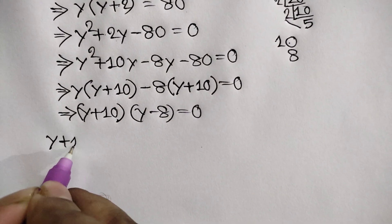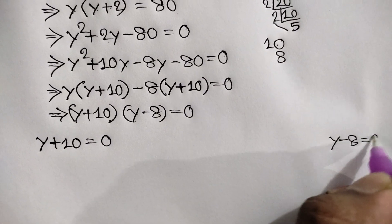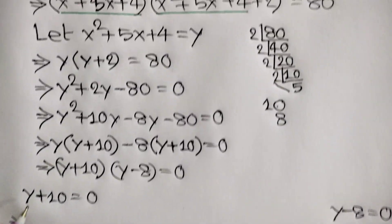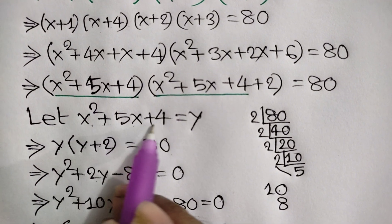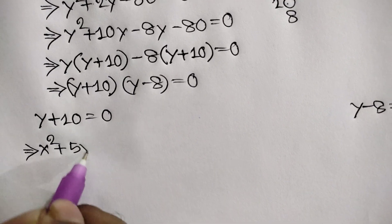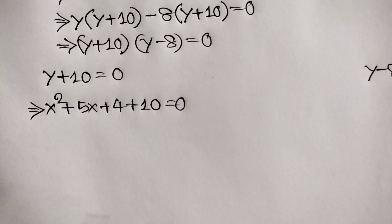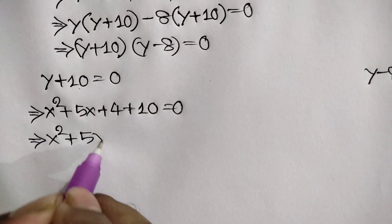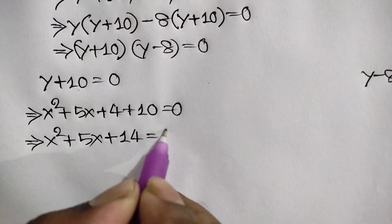From here we have two solutions: y + 10 = 0 and y − 8 = 0. For the first case, since y = x² + 5x + 4, we have x² + 5x + 4 + 10 = 0, which gives x² + 5x + 14 = 0.